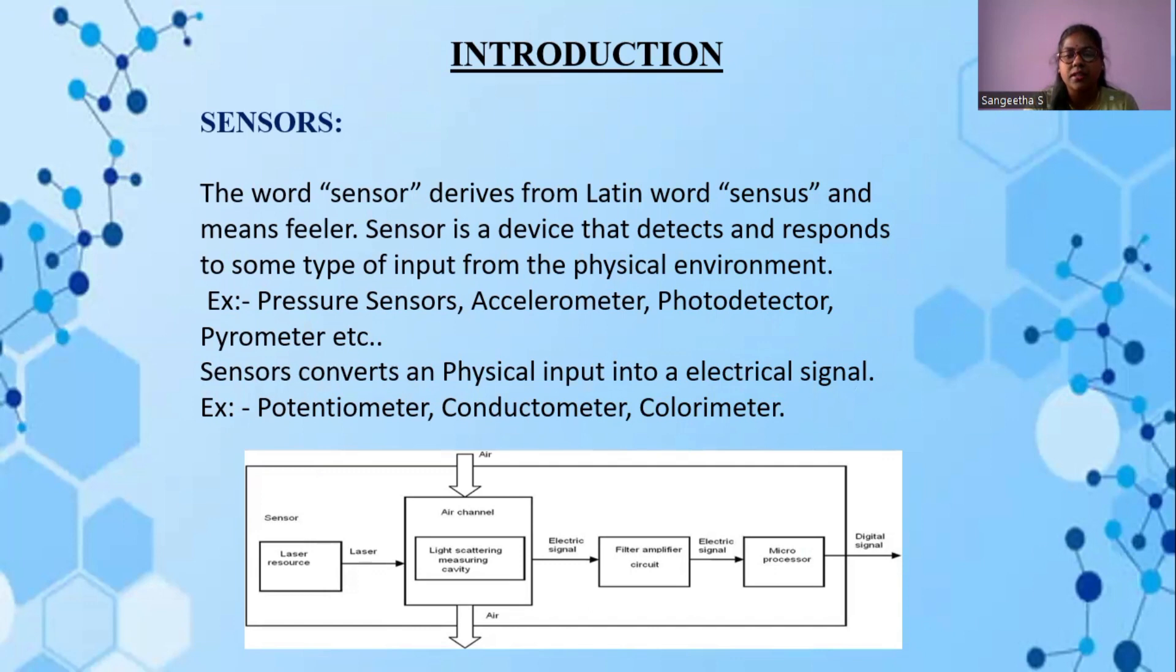For example, pressure sensors, accelerometer, photodetector and pyrometer. Sensors convert a physical input into an electrical signal. For example, potentiometer, conductometer and calorimeter.